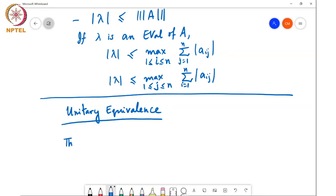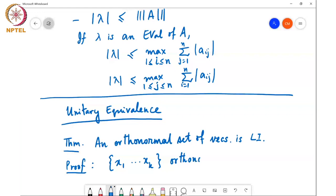Okay. So we have the following result: An orthonormal set of vectors is linearly independent. This is very simple. So I'll just quickly write this out. So if X1 through XK are an orthonormal set of vectors,